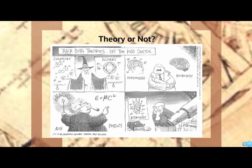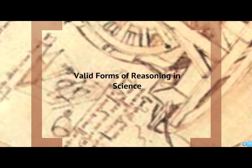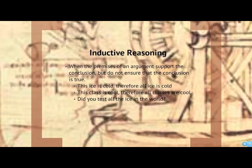Valid forms of reasoning include inductive reasoning — that's where you're trying to make broad generalizations about phenomena based on a couple of observations. For example, holding an ice cube in my hand and saying it's cold, therefore all the ice in the universe is cold. Well, that may be true, but it doesn't ensure the conclusion is true just because I held one ice cube. These statements have to be pretty specific if they're going to be really useful, but inductive reasoning is often used by scientists and there's nothing wrong with it.